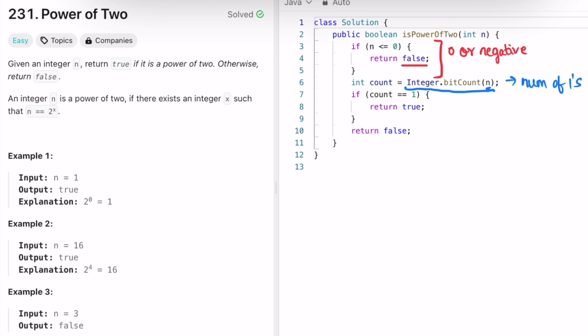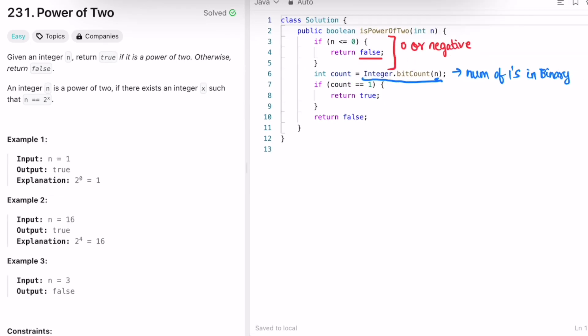This will give us the number of ones present in binary format and I'm storing it inside a variable count. If this variable is equal to one then we are returning true, if it is greater than one then we are returning false.